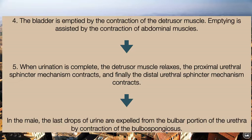The bladder is emptied by contraction of the detrusor muscles, assisted by contraction of the abdominal muscles. When urination is complete, the detrusor muscle relaxes, the proximal urethral sphincter mechanism contracts, and finally the distal urethral sphincter mechanism contracts. In the male, the last drops of urine are expelled from the bulbar portion of the urethra by contraction of the bulbospongiosus.